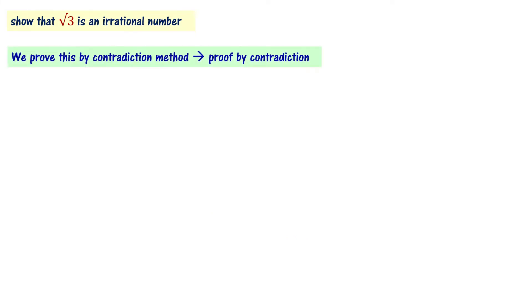Show that root 3 is an irrational number. We prove this by contradiction method — that is why this is called the proof by contradiction method.